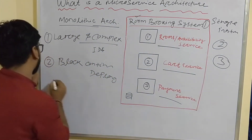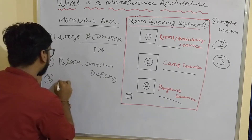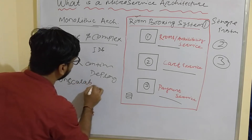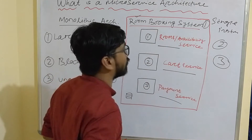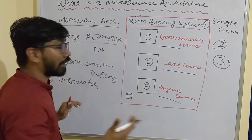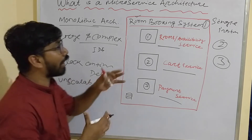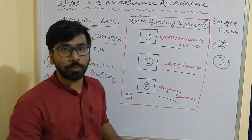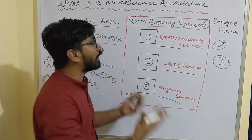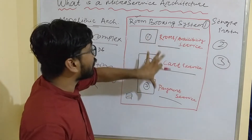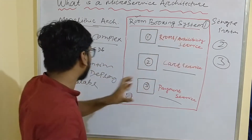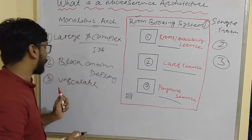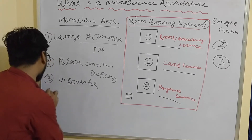The third drawback is that it is unscalable. While I told you it can be scaled through a load balancer, the disadvantage is that if you have multiple services, the first service might need more memory and the second one might be more CPU intensive. We cannot scale on a per-service basis, so this is another drawback of monolithic architecture.